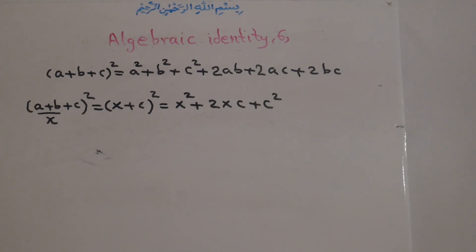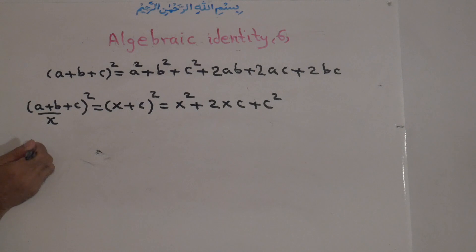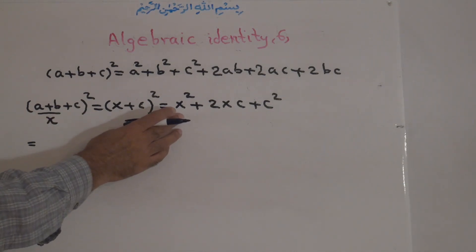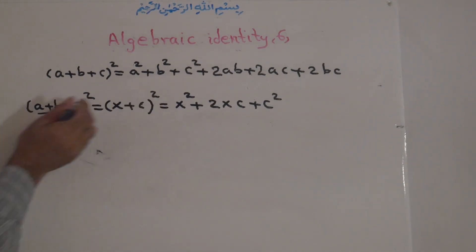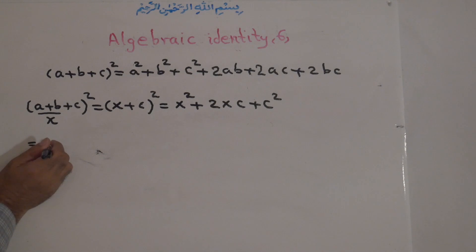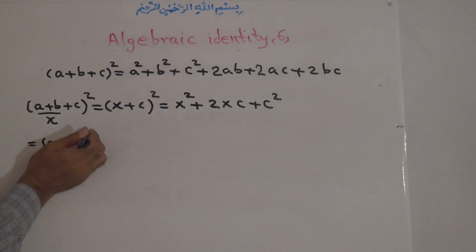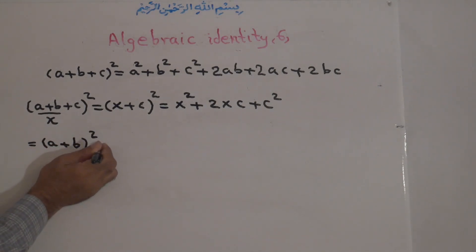Now, what do we do? We plug in the value of x. x to the power of 2 — x is A plus B. Instead of x, we write A plus B to the power of 2, plus 2 times x.